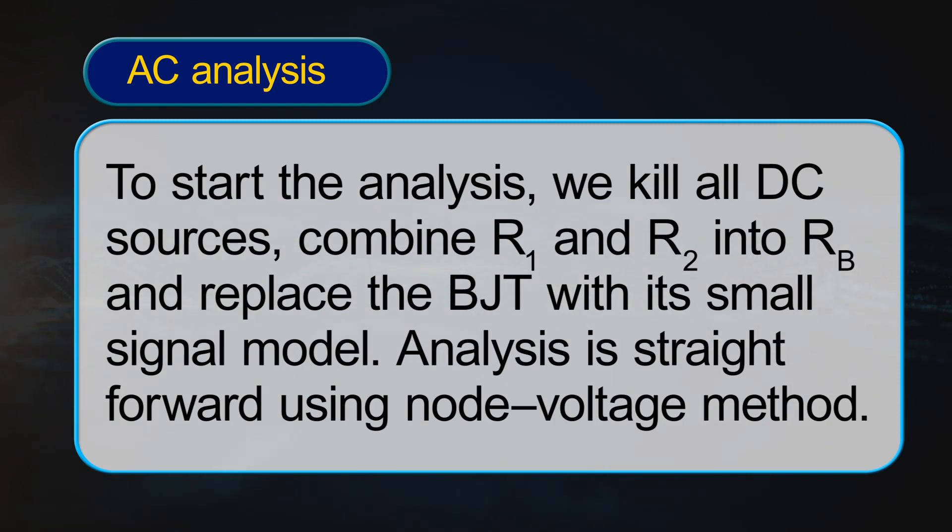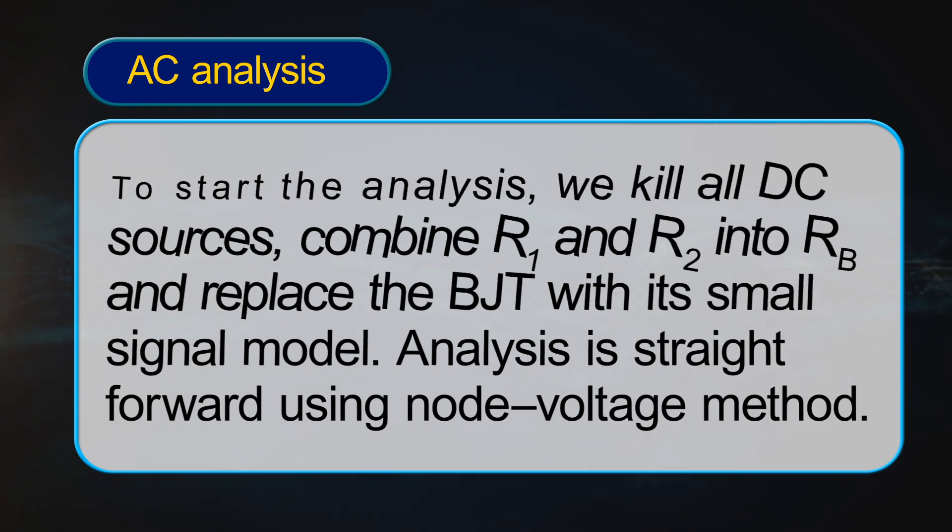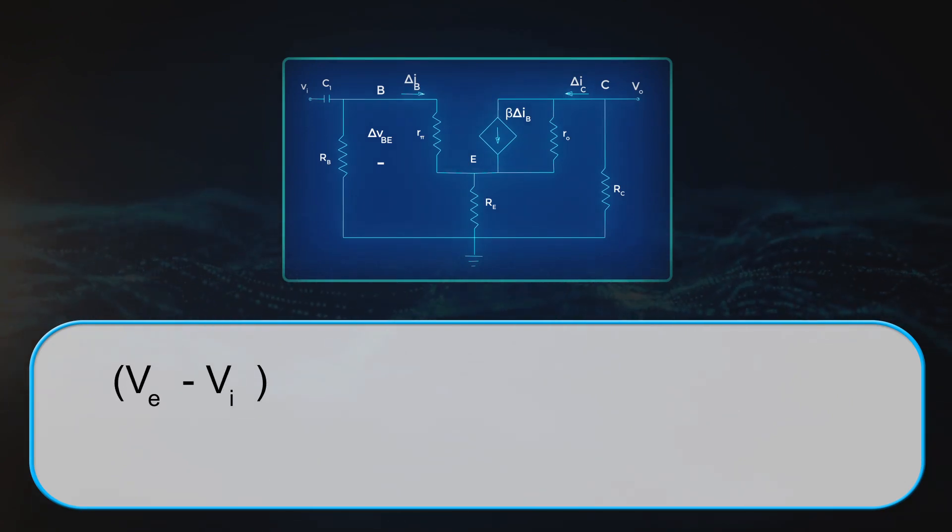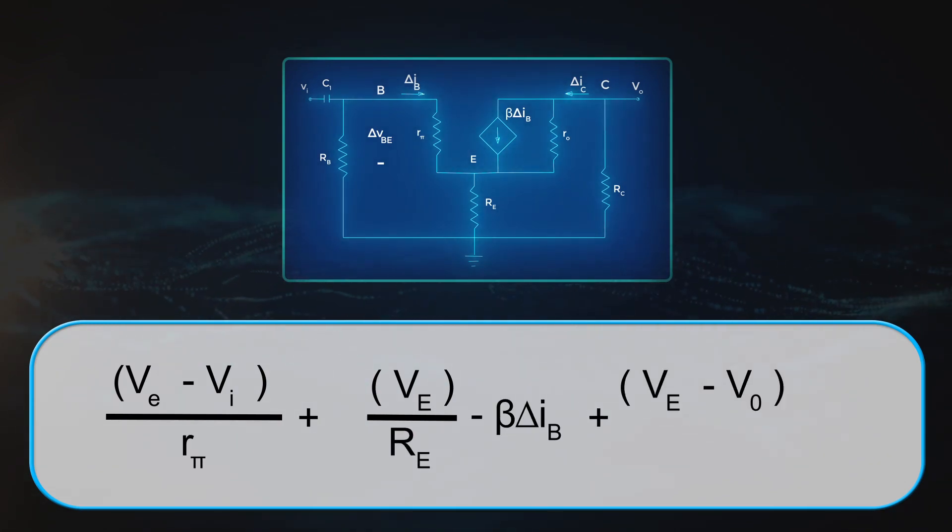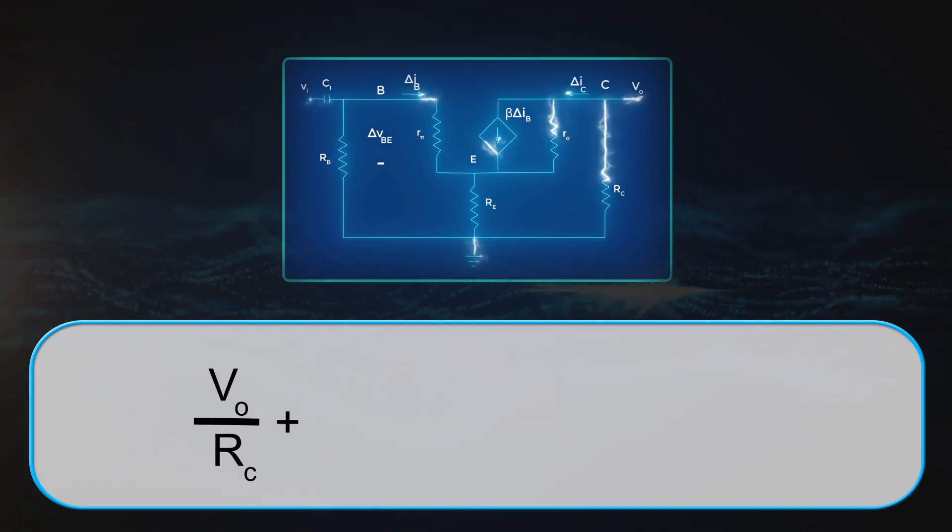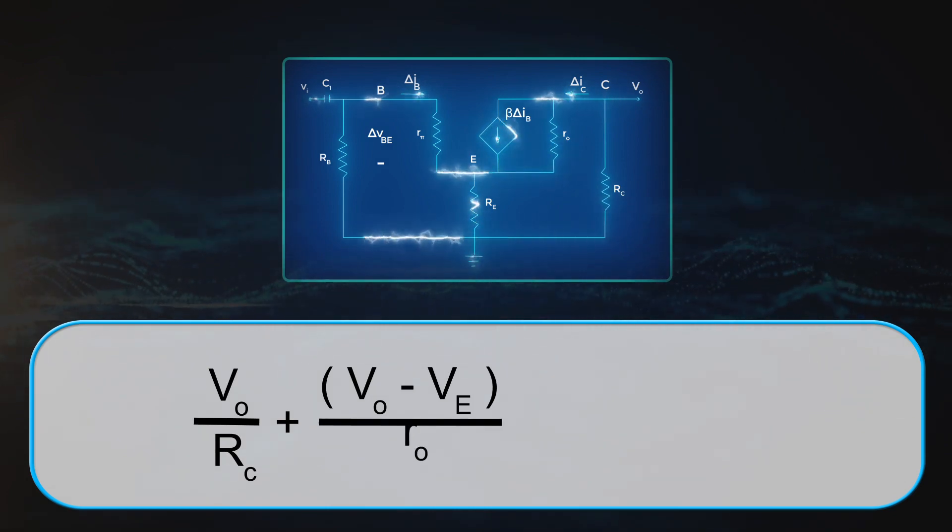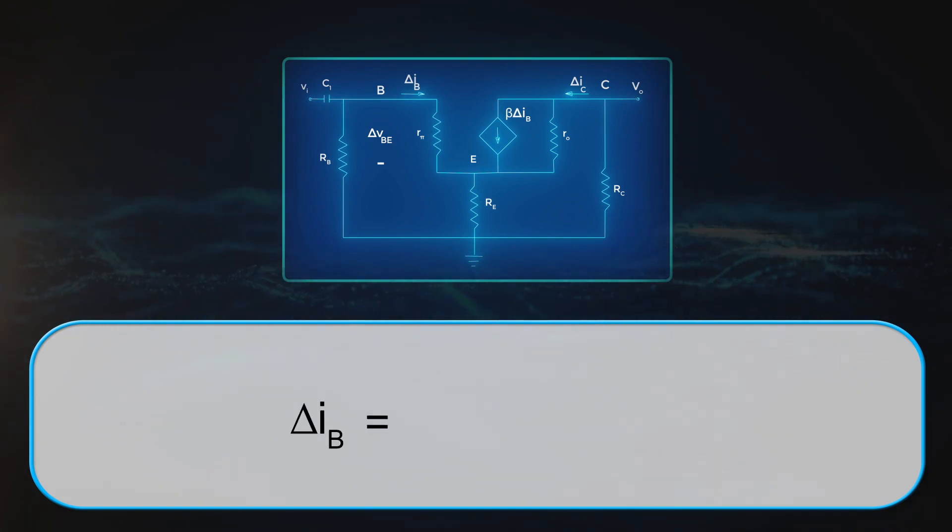Analysis is straightforward using node voltage method. VE minus VI by R Pi plus VE by RE minus beta times delta IB plus VE minus VO by RO equals to 0. VO by RC plus VO minus VE by RO plus beta times delta IB equals to 0. Delta IB equals to VI minus VE by R Pi.